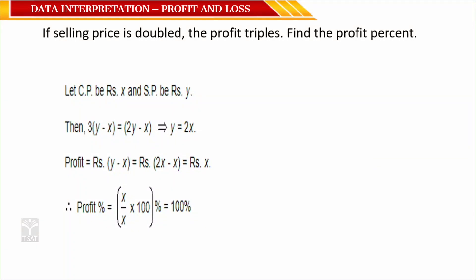Question 1: If the selling price is doubled, the profit triples. What is the profit percentage? Let the cost price be x and selling price be y. Case 1: profit = y minus x. Case 2: selling price becomes 2y, profit becomes 3 times, meaning 3(y − x). But according to this data, the profit in Case 2 is also equal to 2y − x.